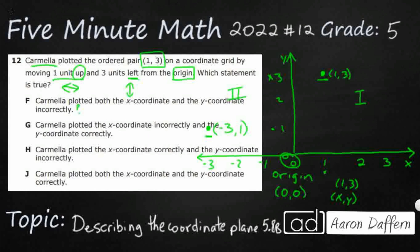Carmela plotted the x-coordinate incorrectly and the y-coordinate correctly — is one right and one wrong? No, they're both wrong, because this is where she should have been and this is where she ended up. Carmela plotted the x-coordinate correctly and the y-coordinate incorrectly — that's the opposite, so no. And the last option is that both the x and y-coordinate are done correctly — no, you're off the grid, out of the quadrant, definitely did not plot them correctly. So our answer here is going to be F.